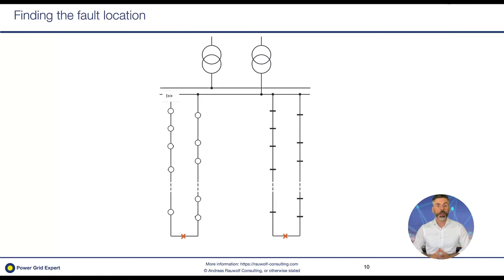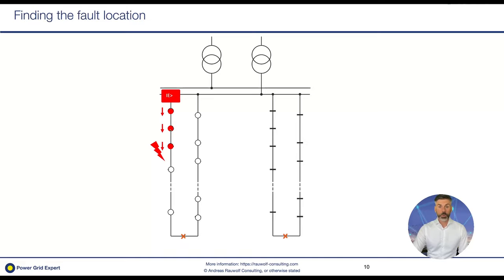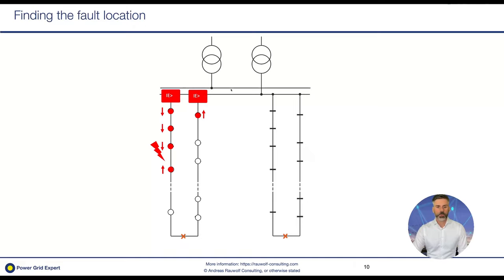In case of a fault, we have our feeder with a normally open point, and the fault location is between two secondary substations. The protection relay in the fault feeder indicates an earth fault pointing toward the feeder. The indicators present will point toward the fault location. It can also happen that there is an indication behind the fault location, but it still points toward the fault location. In healthy parts of the feeder or in totally different areas, backward indications may occur — but once you know this, you can filter them out easily.